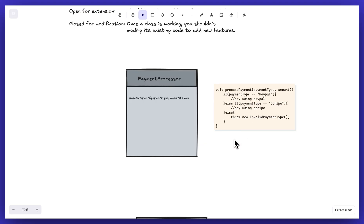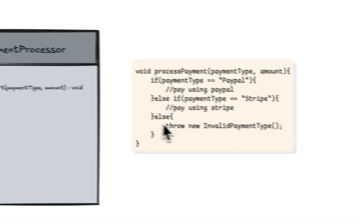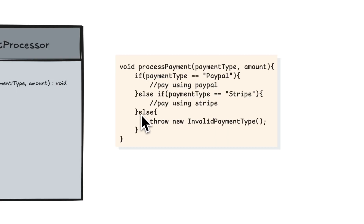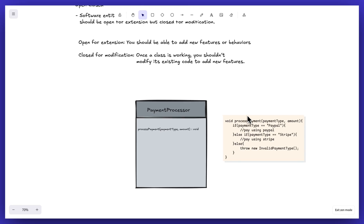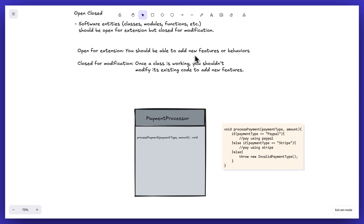To add Google Pay, we have to come to this particular class and edit this code. We have to add an else-if statement like: else if payment type equals Google Pay, then pay using Google Pay. This is a violation of the Open/Close Principle, because we want to add a payment gateway but we are modifying the same class or existing code.